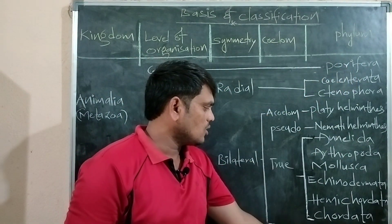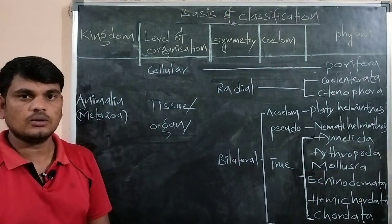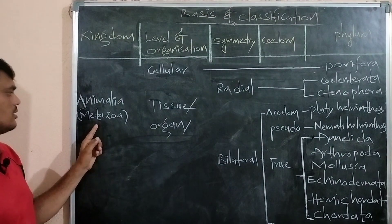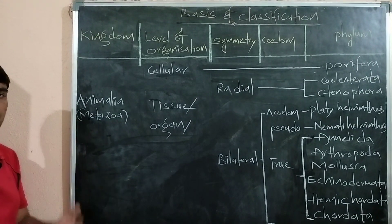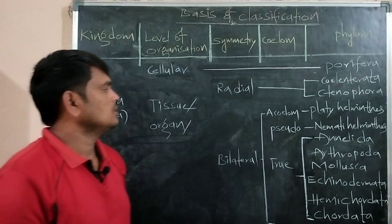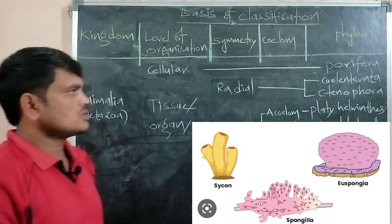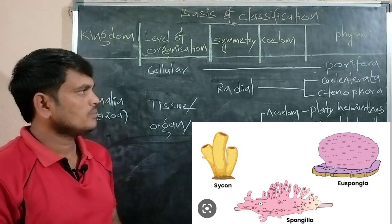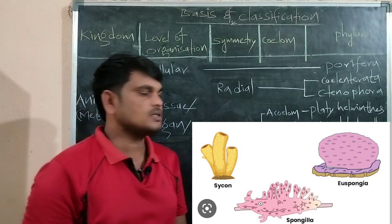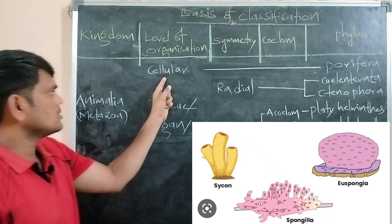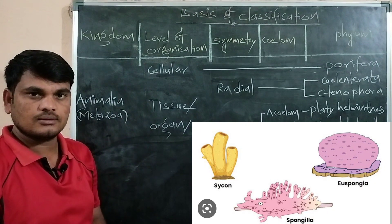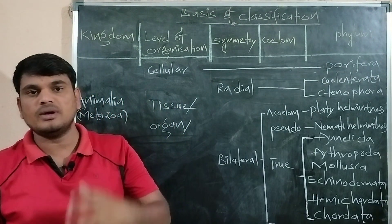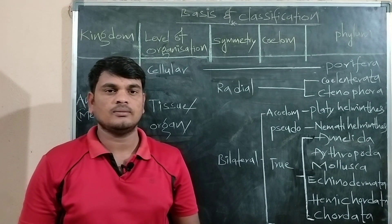Kingdom Animalia includes two sub-kingdoms: Protozoa and Metazoa. Metazoa includes multicellular animals from Porifera to Chordata — all these phyla are kept under Metazoa. Porifera includes a number of multicellular animals like sponges; the body of the sponge is made up of many cells. Porifera exhibits cellular level of organization.